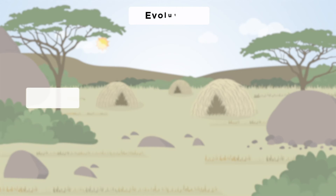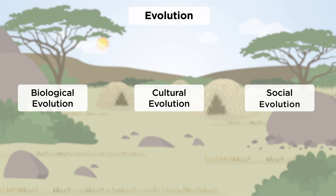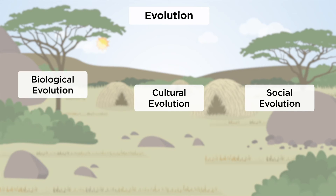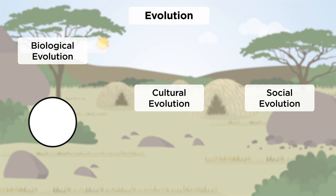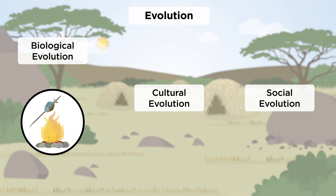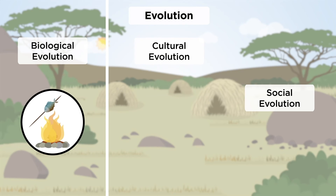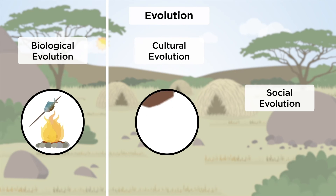Biological, cultural, and social evolution have been essential for the evolution of the human household. Through biological evolution, individual skills and characteristics evolved, forming the household and expanding its activities. Cultural evolution advanced household collaboration through learnt skills in fire use, tool-making, and child-rearing.